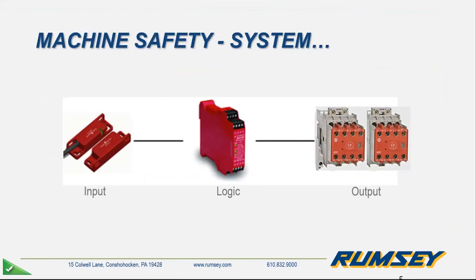When we talk about a safety system, there are really three subsystems: the input, the logic, and then the output. In my experience, if there's anything that gets neglected more than others, it would be the output. Oftentimes you get the question: do I really need redundant safety contactors, or do I really need that safe off drive? Yes, you do, because if you don't have that, it's going to be the weakest link and bring the whole safety system down — maybe to a performance level B or C — when you might have a performance level E on the input and a performance level E product for the logic. That weakest link is going to bring the whole system down, so it is important to keep that in mind.